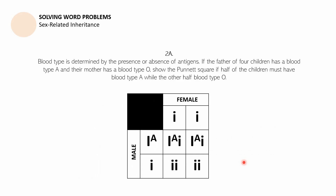For the next problem, this is the Punnett square that must be shown so that half of the children have blood type A while the other half have blood type O. If you pair a female that has blood type O with a male that has blood type A, the female must be homozygous recessive — that is the only allele pairing for blood type O. And for the male, you need to use the heterozygous pairing. If you use the homozygous dominant pairing, all of the offspring would be blood type A. But since we used the heterozygous pairing, half of the offspring will be heterozygous and thus express blood type A in their phenotypes, and the other half will be homozygous recessive and thus express blood type O.